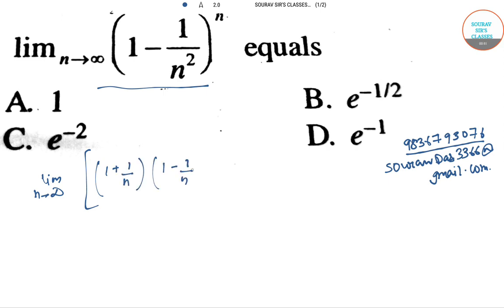This can be split into the product of two limits: [limit n→∞ (1 + 1/n)^n] times [limit n→∞ (1 - 1/n)^n].